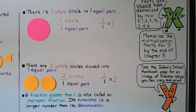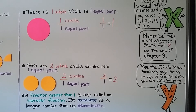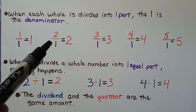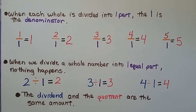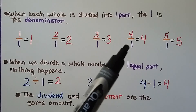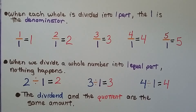You're going to hear it called that in middle school. Its numerator is a larger number than its denominator. When each whole number is divided into one part, the one is the denominator. So if we have one circle in one part, we have one. Two circles with one part equals two whole. Three as the numerator and one as the denominator equals three whole. Four as the numerator with one as the denominator equals four whole, and five whole follows the same pattern.